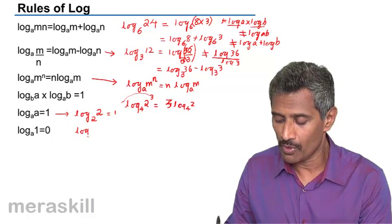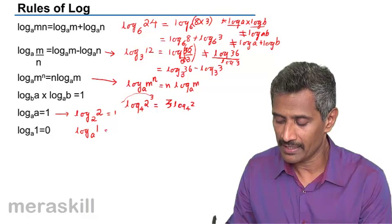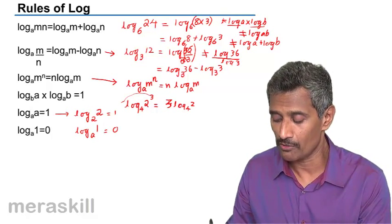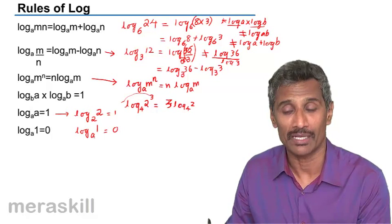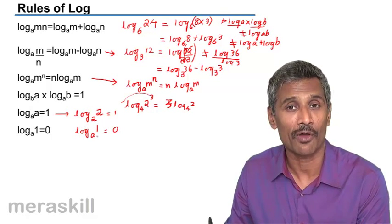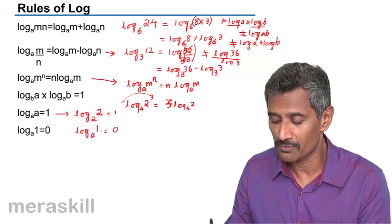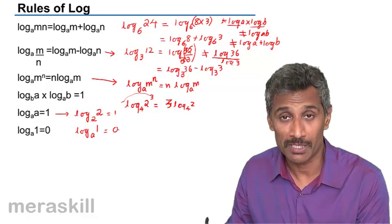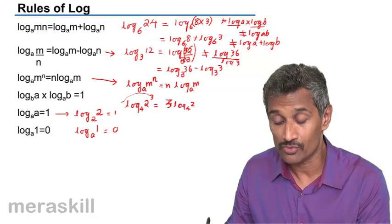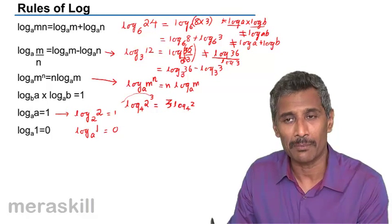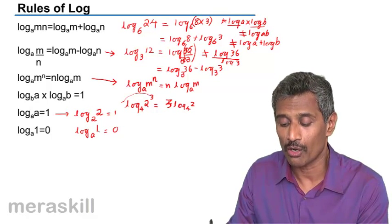Log of 1 to the base a is 0. We know that any number raised to 0 is 1. If you convert this to exponential form, we see that the relationship is true. You get a raised to 0 is 1 which is valid. Log of 1 to any base. These two rules we shall be using off and on.